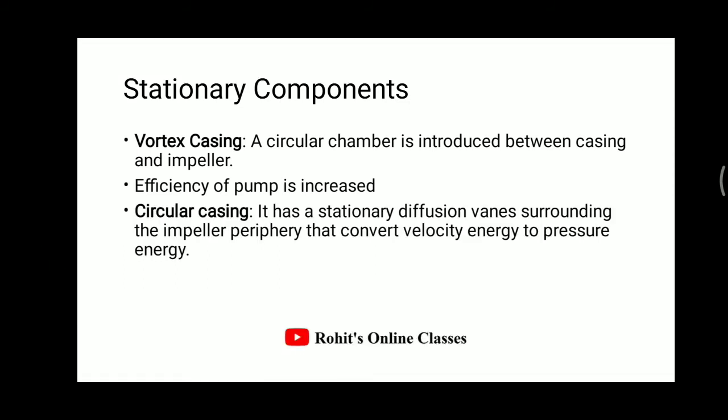The third type is circular casing. It is a stationary diffusion ring surrounding the impeller periphery that converts velocity energy into pressure energy. It is generally used for lower heads. The velocity energy — that is, kinetic energy of the fluid — is converted into pressure energy. It is also known as diffuser ring casing.